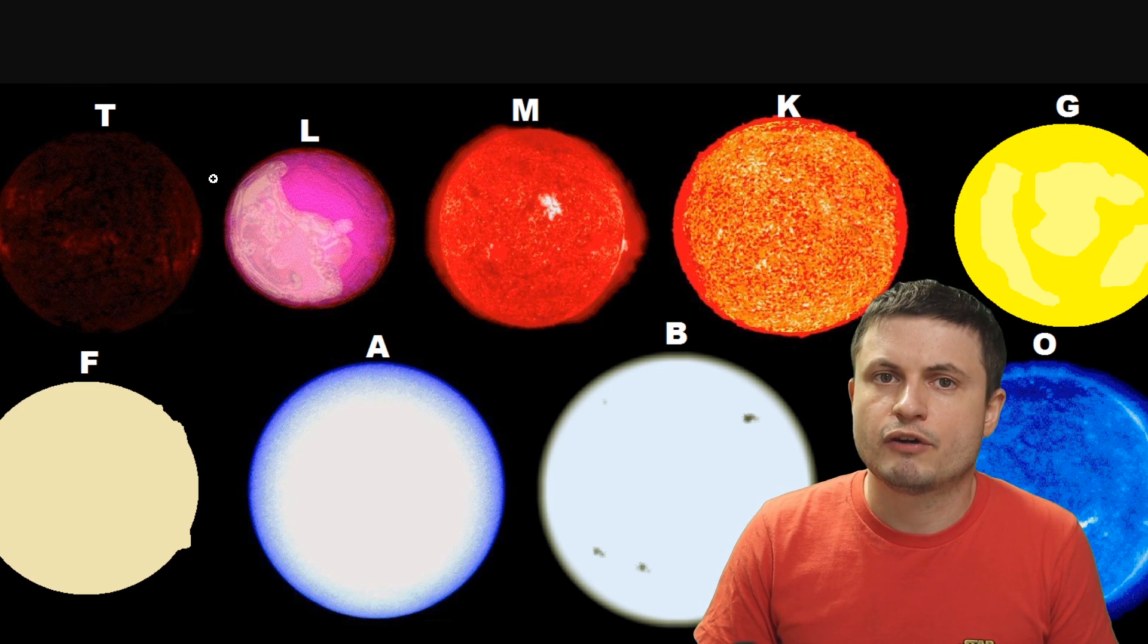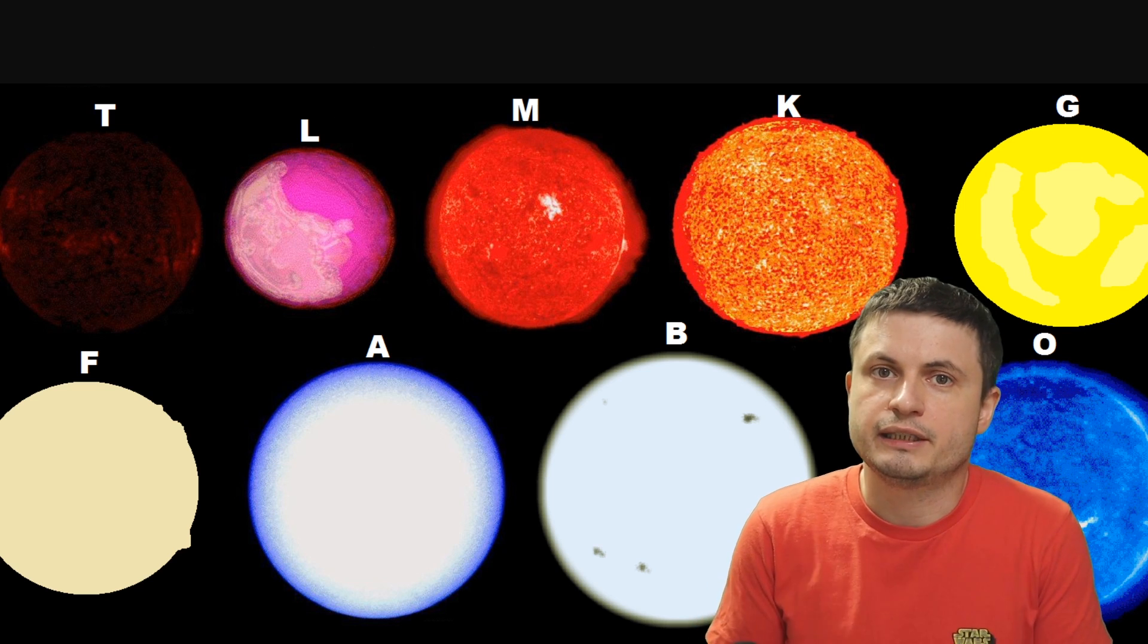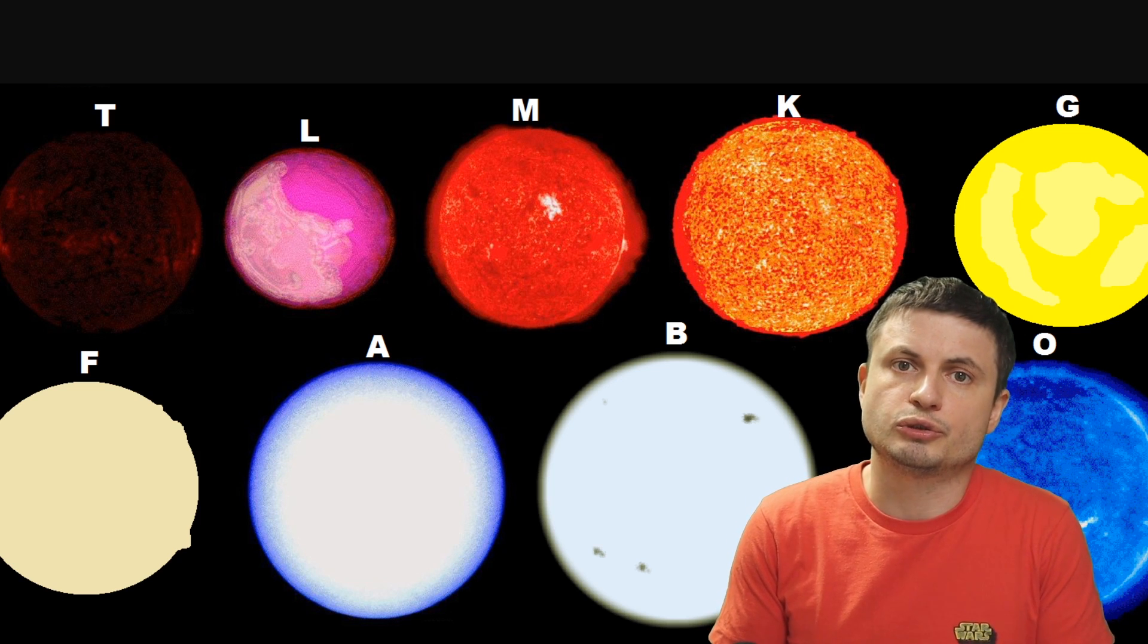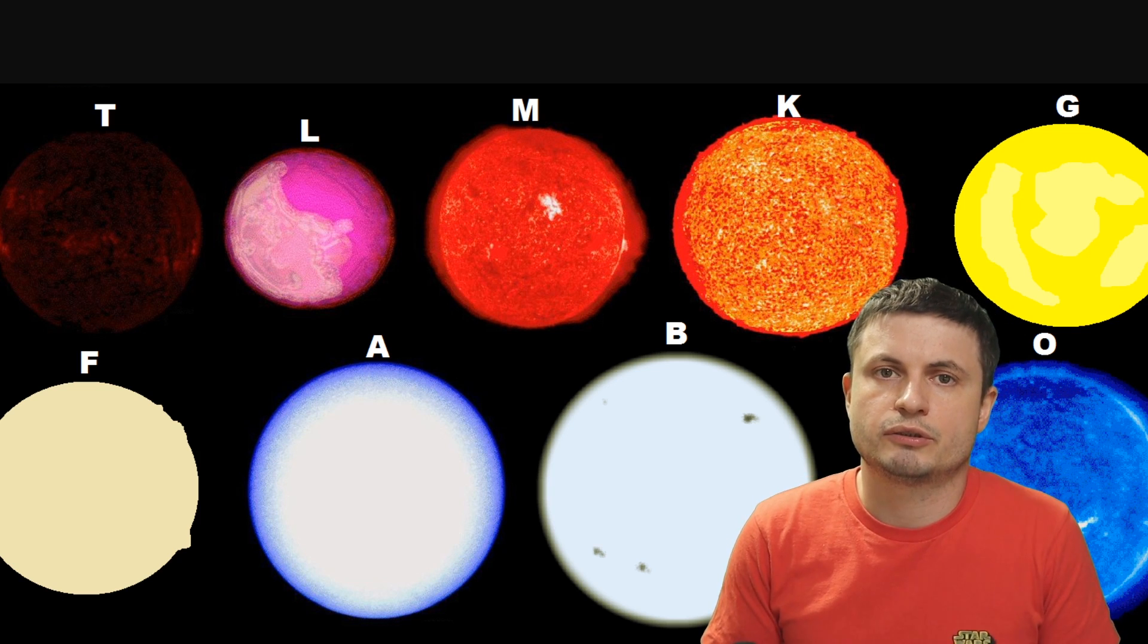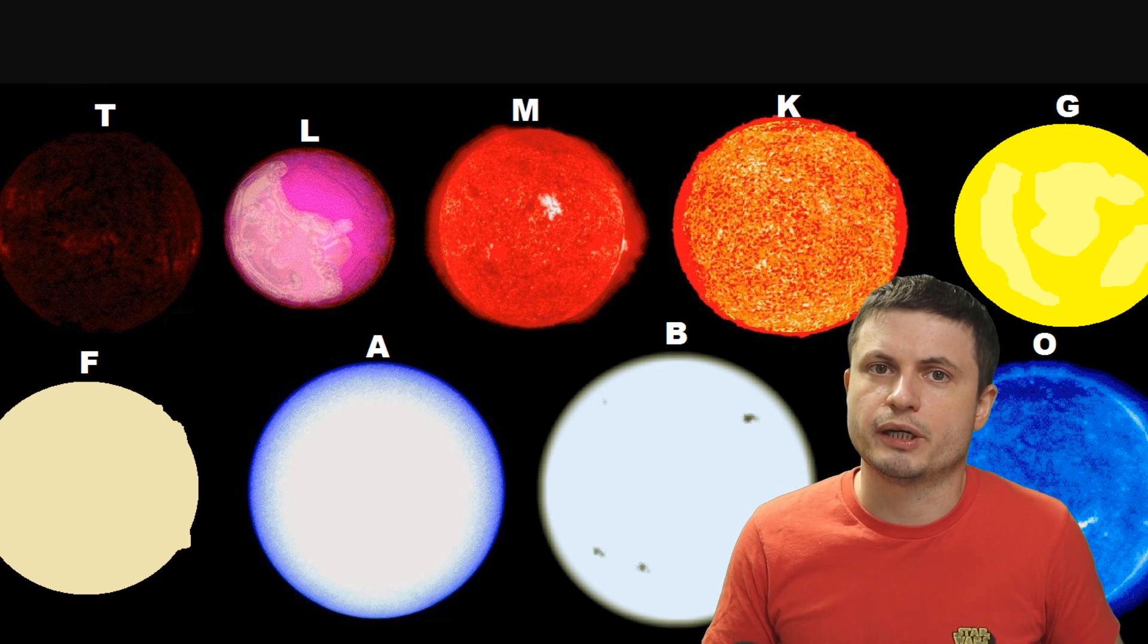Then on the opposite spectrum we have objects like T-type and L-type which are known as brown dwarfs and they simply don't provide enough energy for anything and usually also contain a lot of dangerous radiation as well. Although these objects are also a lot more mysterious and more difficult to find so we just don't really know enough about them.